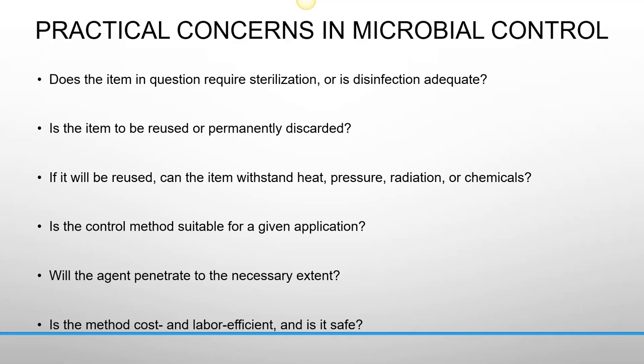If an item will be reused, can it withstand heat, pressure, radiation, or chemicals? For example, if you put a catheter inside an autoclave, will it melt in the presence of all that pressurized heat? Is the control method suitable for the given application? It's not okay to use a gas sterilant next to a patient because the gas would kill the patient. Will the agent penetrate to the necessary extent? UV does a really good job killing microorganisms directly in its path, but it casts shadows and these waves don't bend into every crevice — UV will not go deep into bedding, so it may not be a way to completely disinfect bedding.